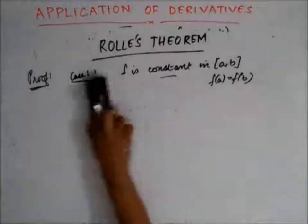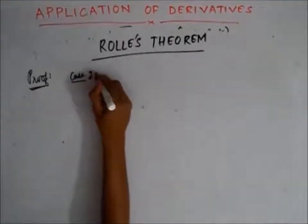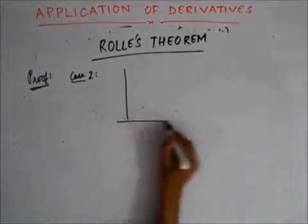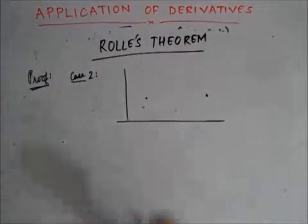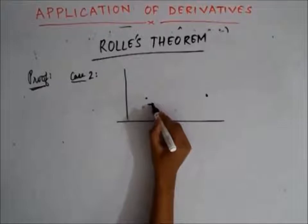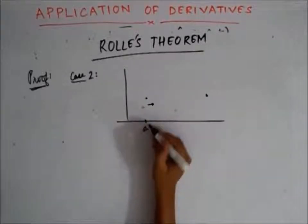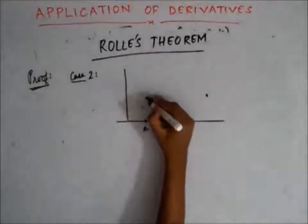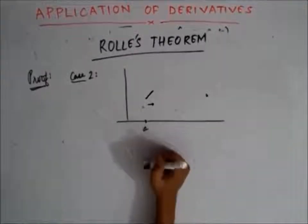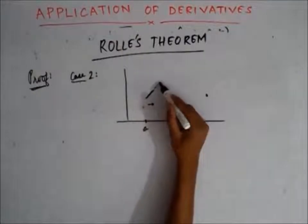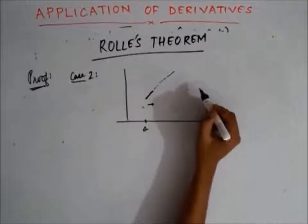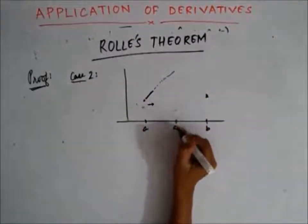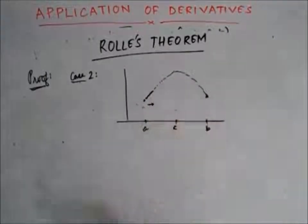Case 2: f is not constant. Since f is not constant but f is continuous and f(a) equals f(b), when we move slightly higher than a, f should either increase or decrease. Let's say it increases. Since f is increasing but must eventually return to the same value f(b) equal to f(a), at some value c it starts decreasing so that it reaches back to that value.